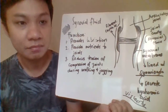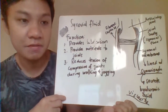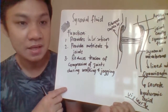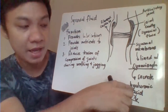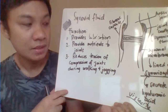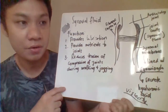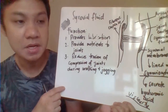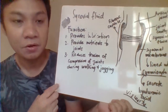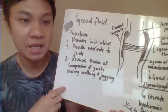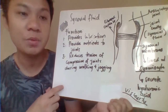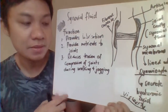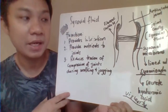The basic functions of our synovial fluid are the following: number one, it provides lubrication because of that hyaluronic acid; number two, it provides nutrients to your synovial joints; and number three, it tries to reduce the compression or friction as we are moving and doing activities like jogging and walking — again because of the hyaluronic acid.